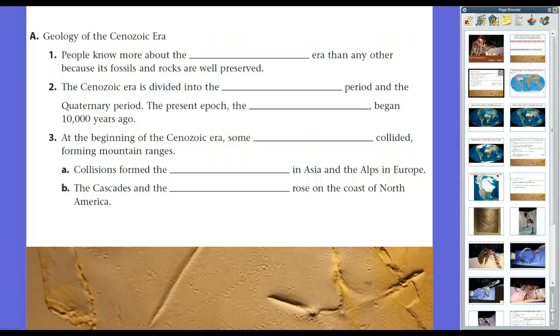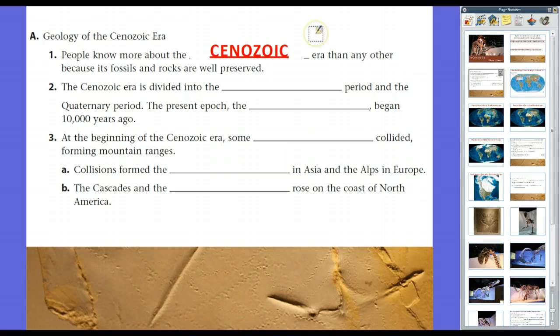Now, in terms of geologic timelines and eras and periods and epochs and eons, we know more about the Cenozoic Era than any other era because its fossils and rocks are so well preserved. Well, of course, the reason why is because it's the highest up in the geologic column. After all, we're currently living in the Cenozoic Era.